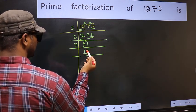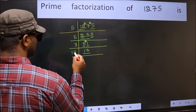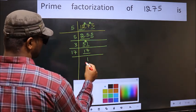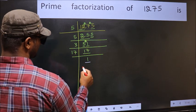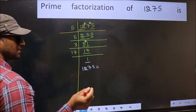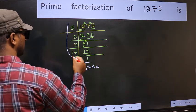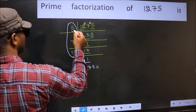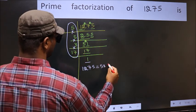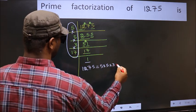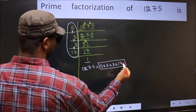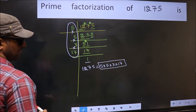Now here we have 17. 17 is a prime number, so 17÷1=17. So we got 1 here. The prime factorization of 1275 is the product of these numbers: 5×5×3×17. This is the prime factorization of 1275.